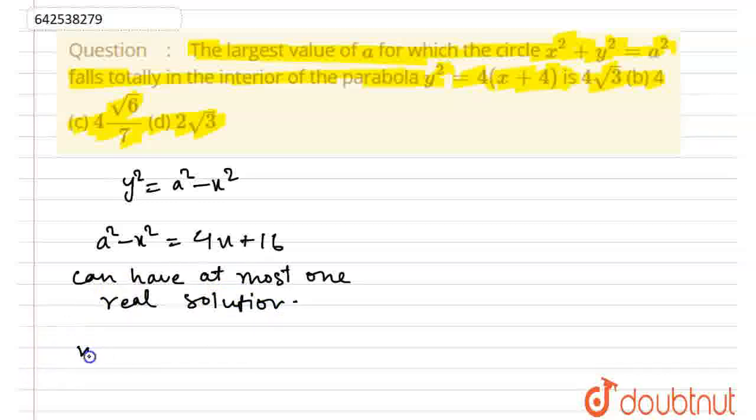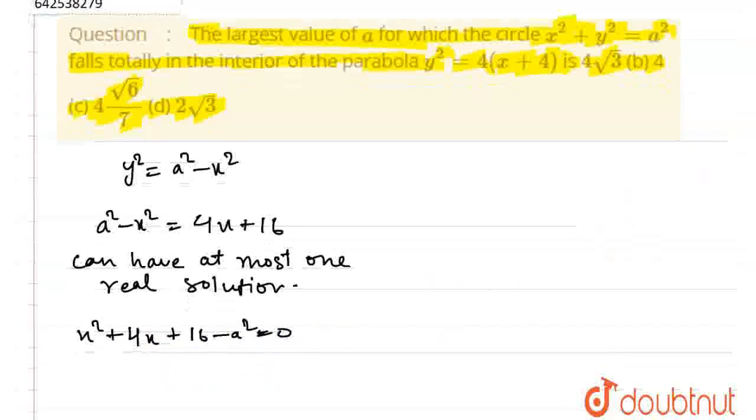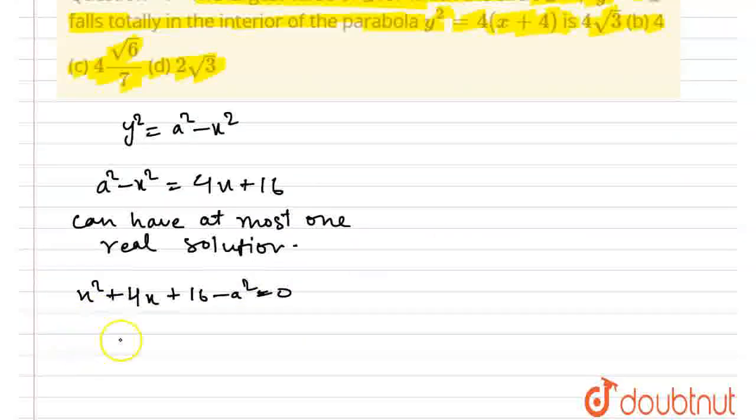So, solving this equation, this becomes x square plus 4x plus 16 minus A square equal to 0. This can have at most one solution. So, the discriminant should be less than or equal to 0.